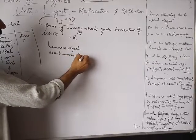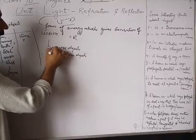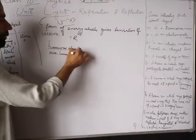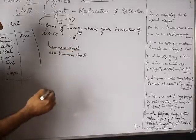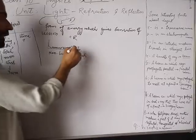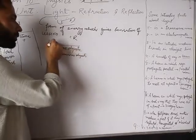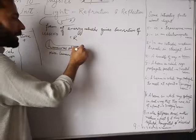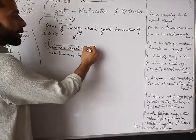Objects which emit their own light are called luminous objects. And those objects which do not emit their own light are called non-luminous objects. So the light that we are discussing — where do we get it from? We get this light energy from luminous objects.